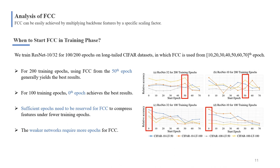Inspired by two-stage training, we study when to use FCC in training phase. FCC starting at 50th epoch generally yields best results for 200 training epochs, while for 100 epochs, starting at 0 epoch is best.